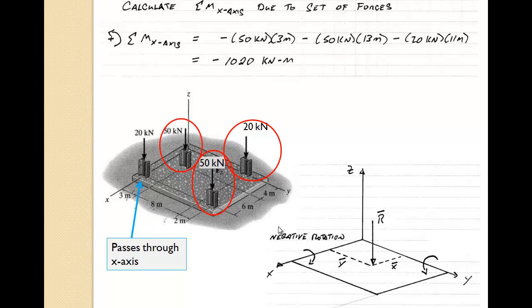Now all these forces are going to cause what we would say clockwise or negative rotation around the x-axis. Again, if you put your thumb along the positive x-axis and curl your fingers about it, that would be the positive rotation, and this negative rotation is in the opposite sense to the curl of your fingers.